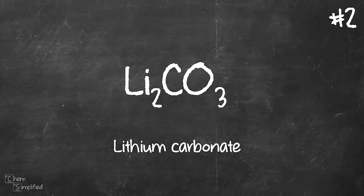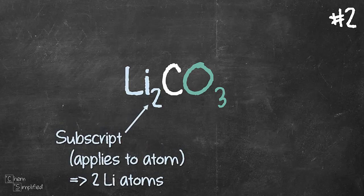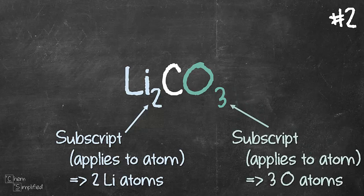Moving on to our second example, lithium carbonate, Li2CO3. We have two subscripts in this formula, two at the bottom of lithium and three at the bottom of oxygen. Since these subscripts only apply to the atom itself, it means we have 2 Li and 3 oxygen.